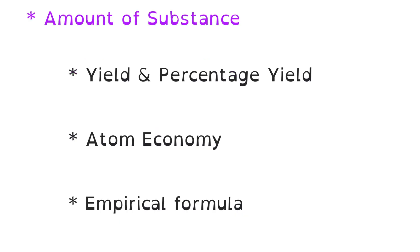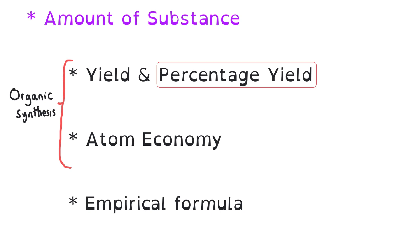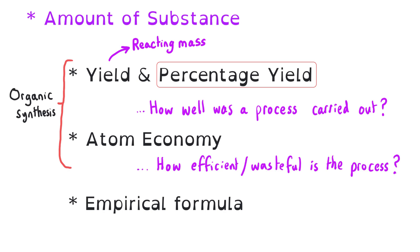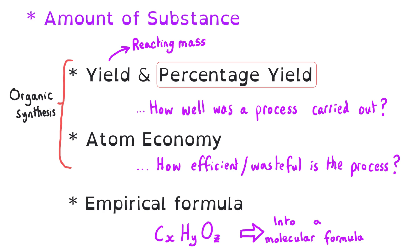The amount of substance topic is the most popular topic in all of A-Level Chemistry, so what could come up on Paper 2? In the context of organic synthesis, two things are highly likely to come up: yield calculations and associated percentage yield calculations — reacting mass calculations and possibly a percentage yield calculation, maybe with a qualitative question about how well a process was carried out. There's also a percentage atom economy calculation, or a qualitative question about how efficient or wasteful a process might be. And you might be asked to calculate an empirical formula and then a molecular formula in conjunction with an Mr value.